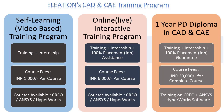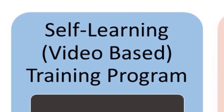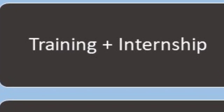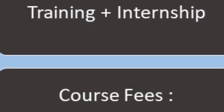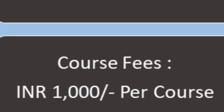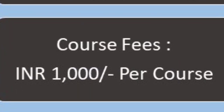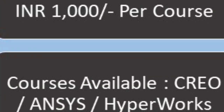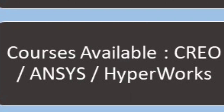Eleation has three modes of training program. The first is the self-learning, video-based training program, which includes training and internship on CAD and CAE software. The course fees for Eleation's self-learning video-based training program is rupees 1,000 per course. You can join Eleation's self-learning Creo CAD software, or Ansys and HyperWorks CAE software training program.